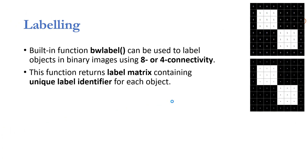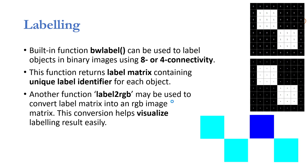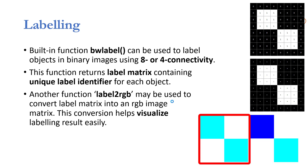Programmatically, the label matrix serves our purpose of labeling, but sometimes we need to visualize all objects present in the image. For that, the built-in function label2RGB will convert the label matrix into an RGB image. This RGB image will have a different color for every unique label. If we used 4-connectivity and have 2 objects, label2RGB will use 2 different colors. If 8-connectivity was used and there is only 1 region, then there will be a single color result.